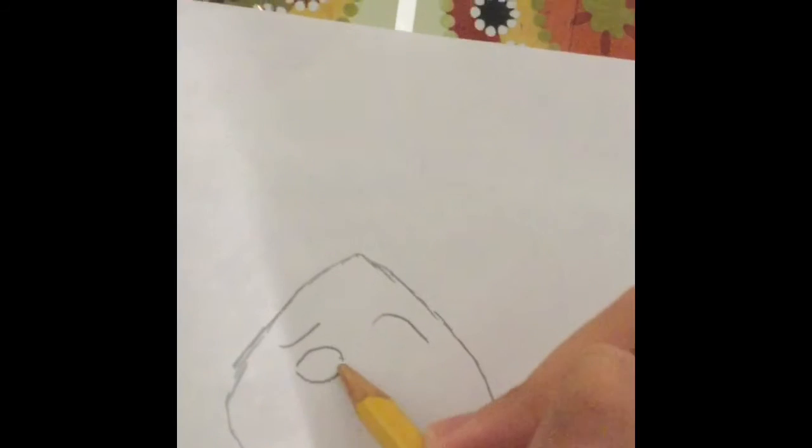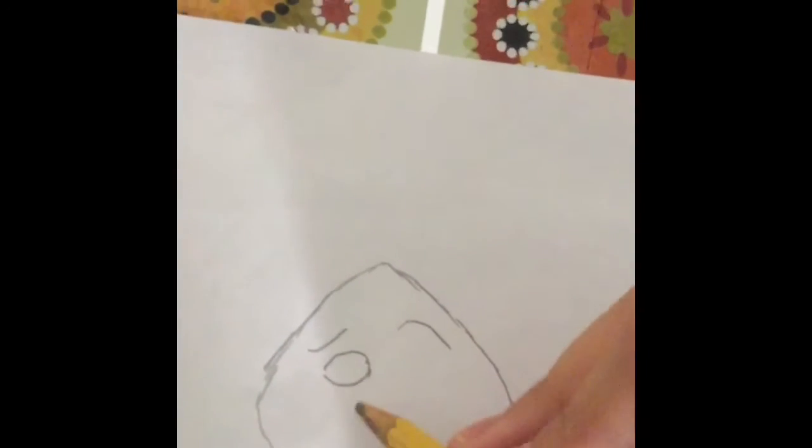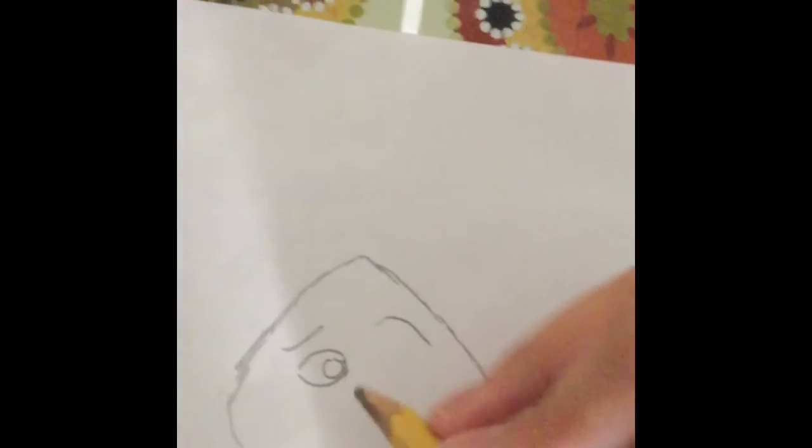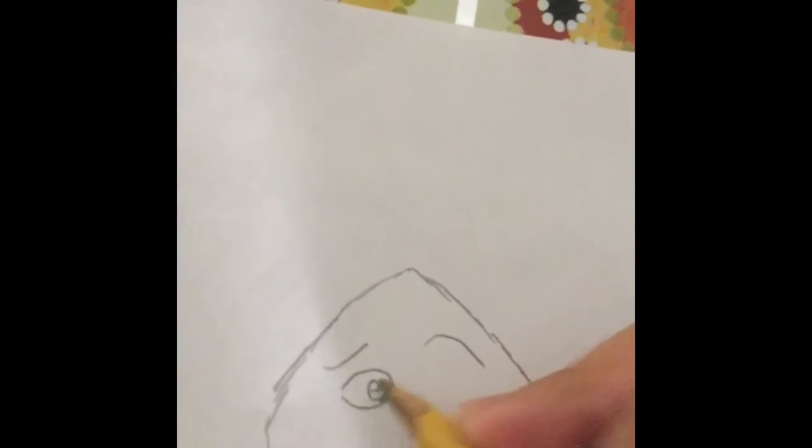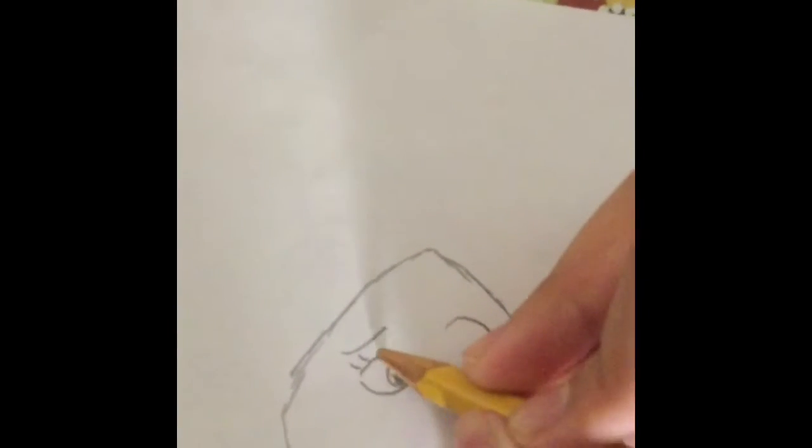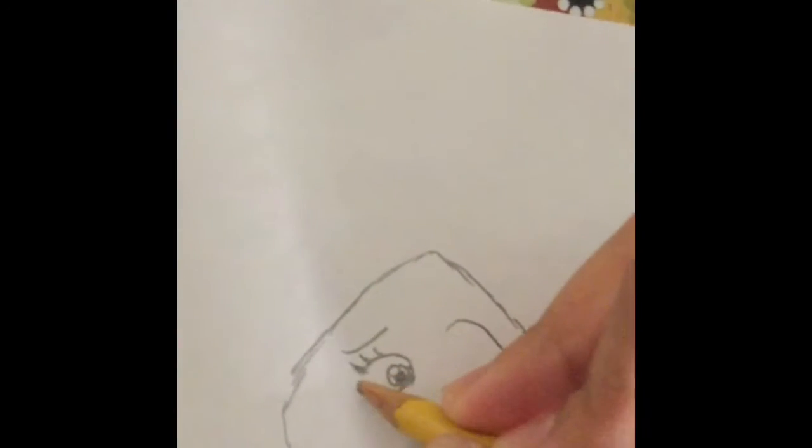Then I draw her eye like that. Her iris is really small. Then I add the pupil and her eyelashes. There you go.